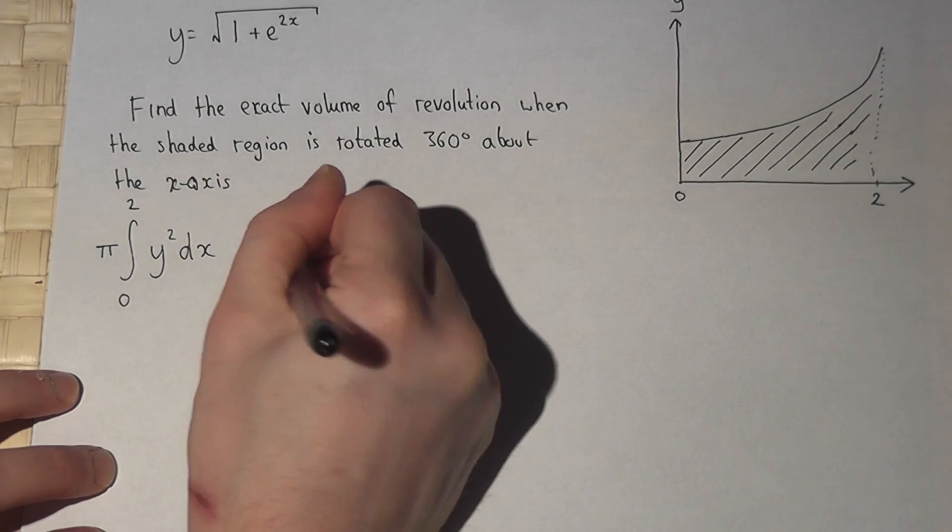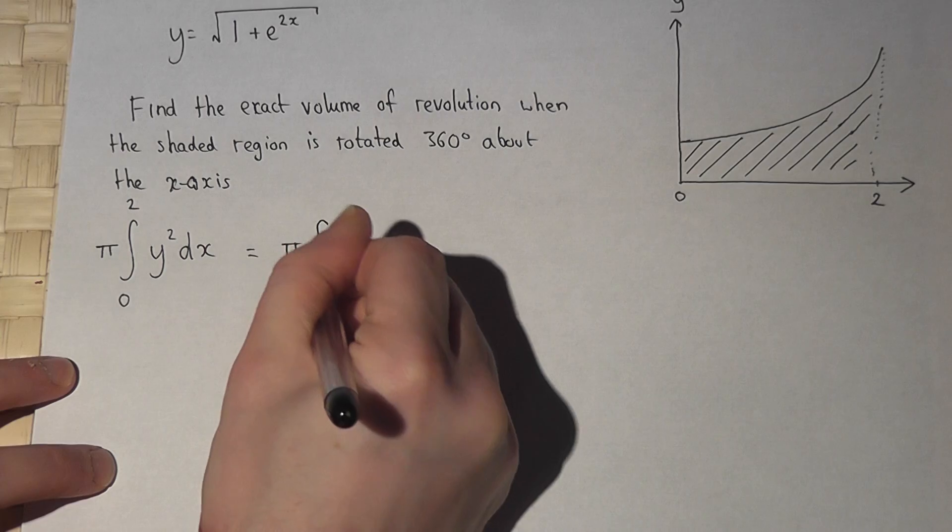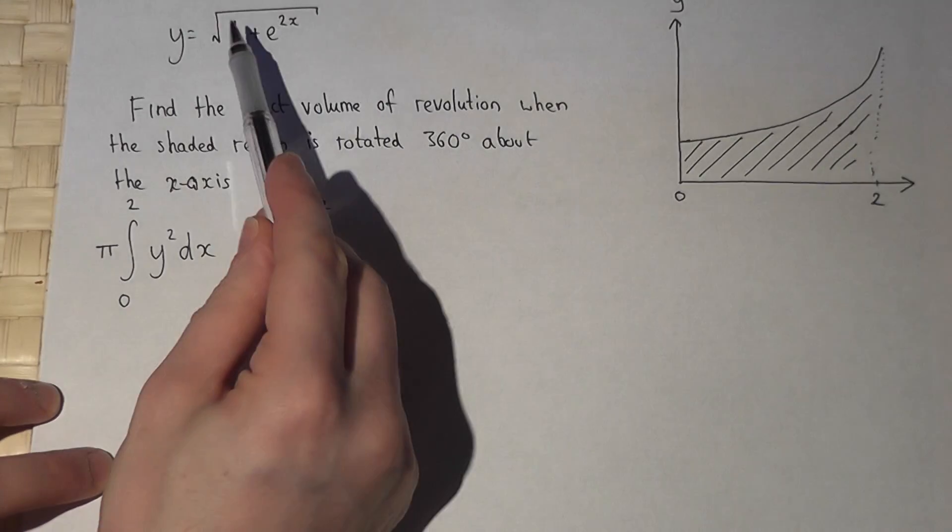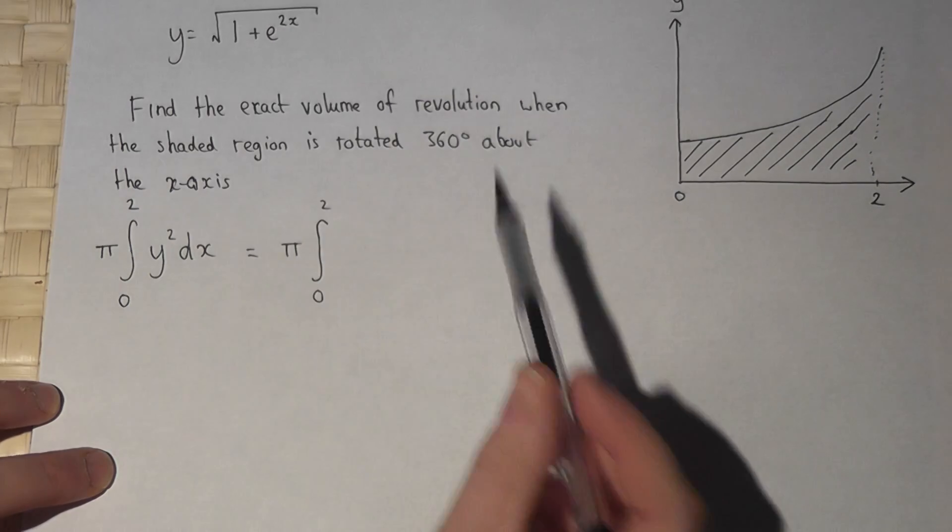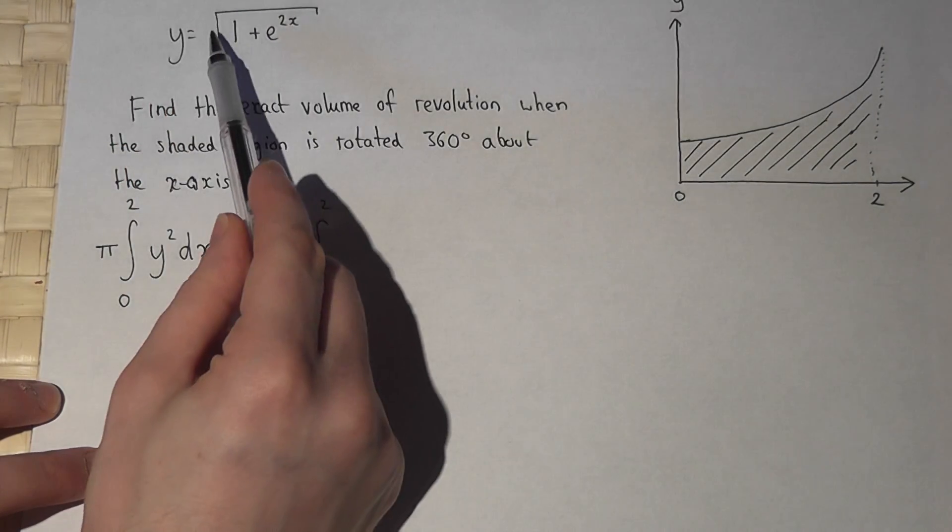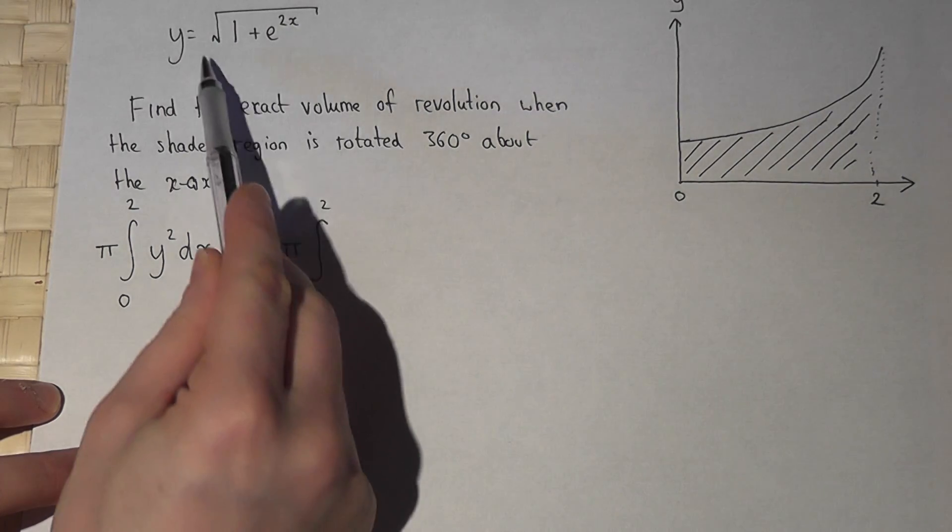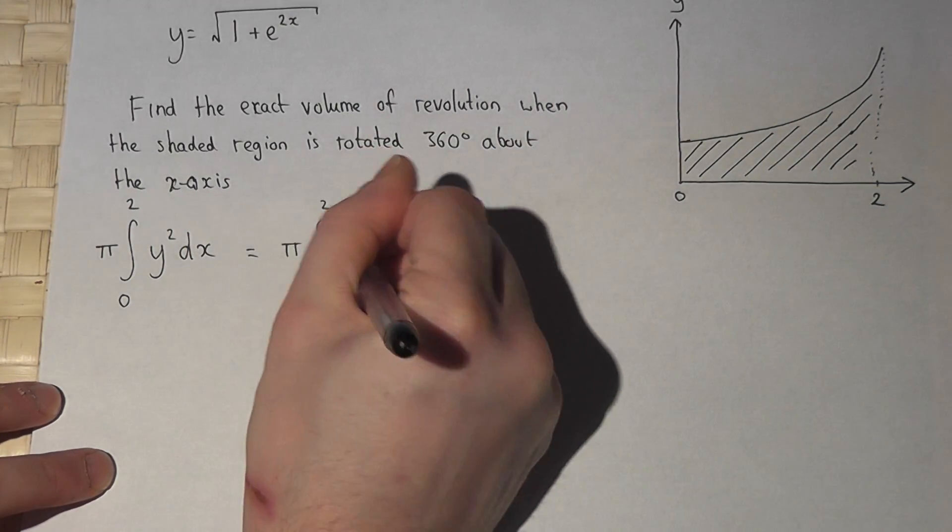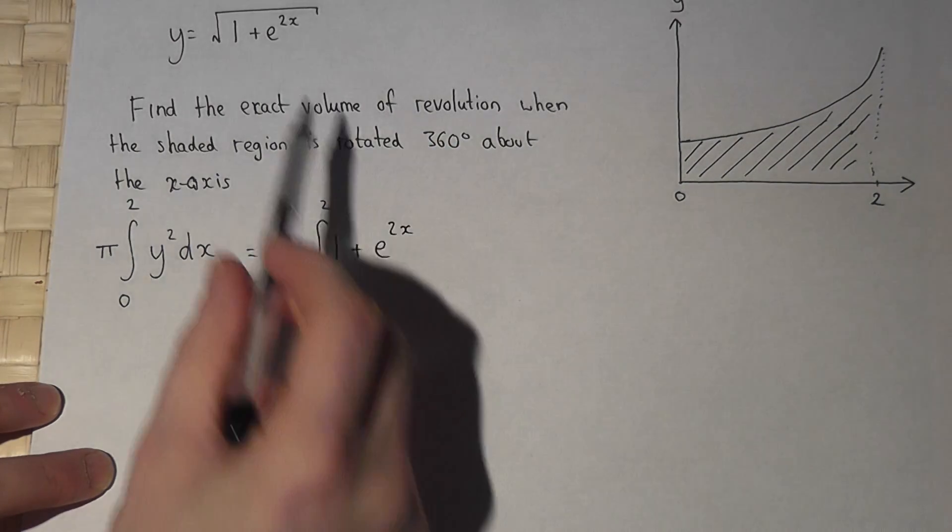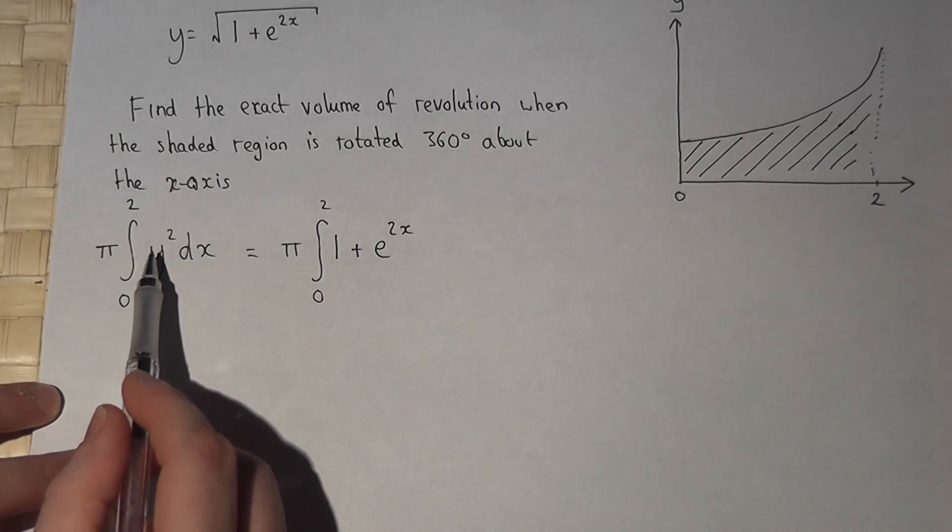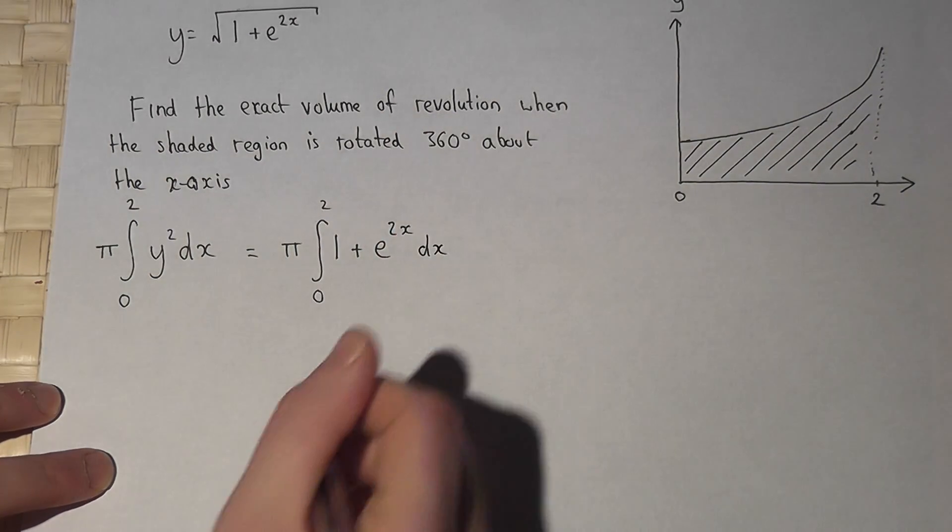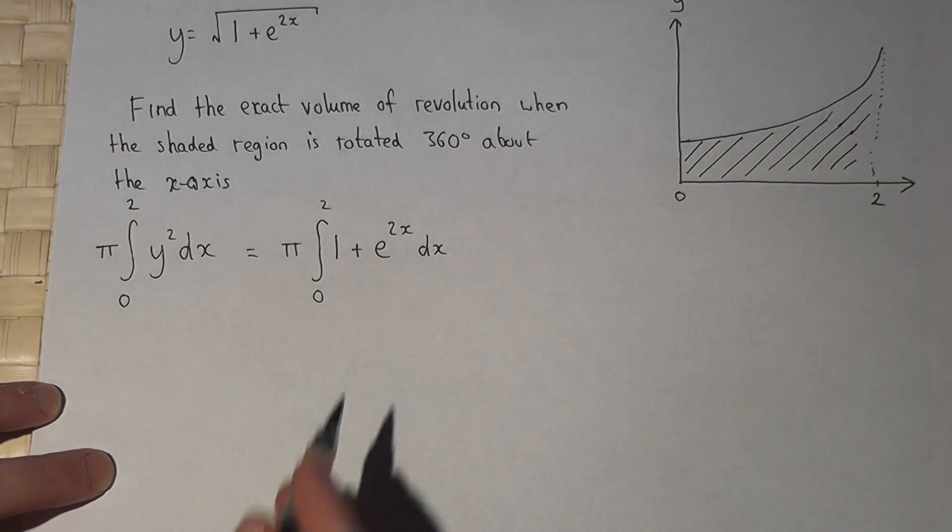Now we know that y equals the square root of 1 plus e to the power of 2x, so y squared will just equal this squared. The square root just cancels and we're left with 1 plus e to the 2x as the integrand.